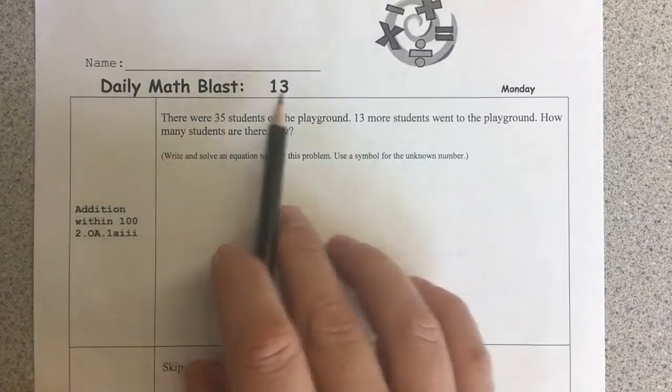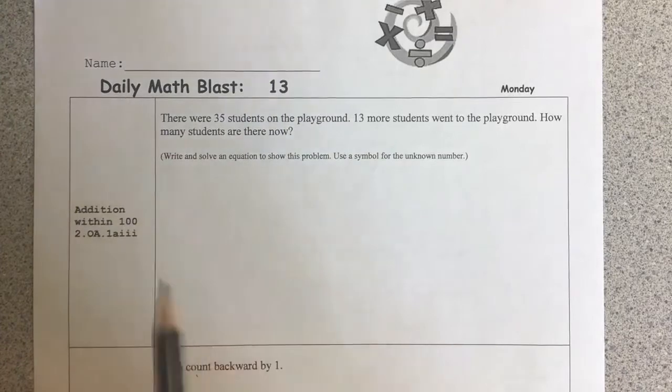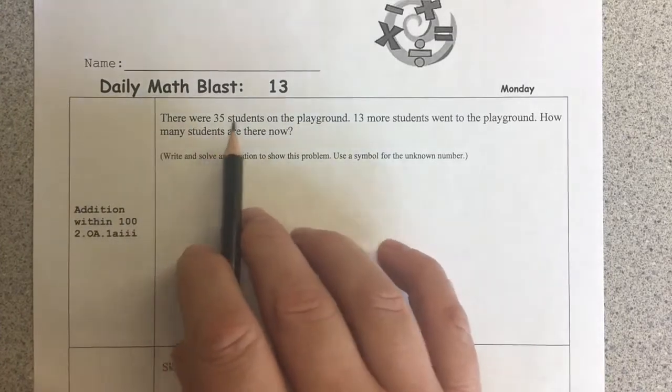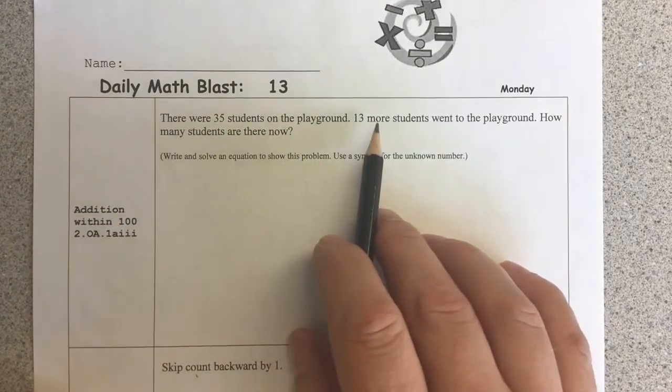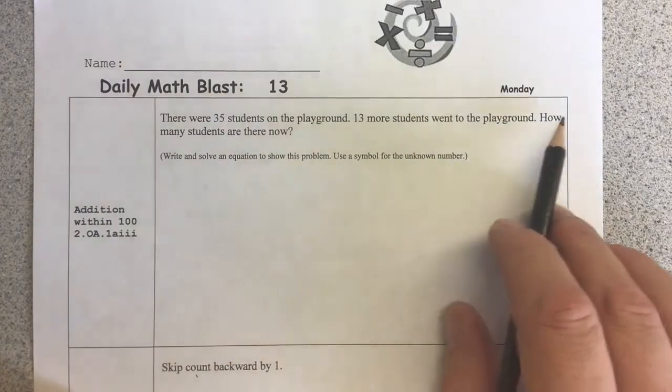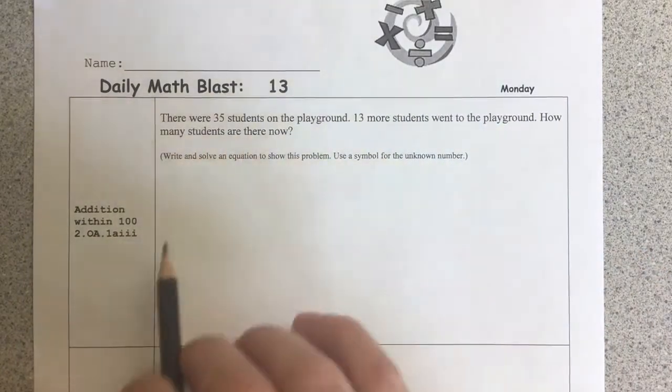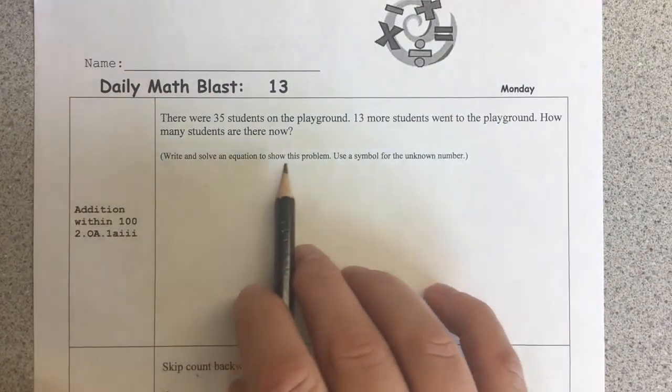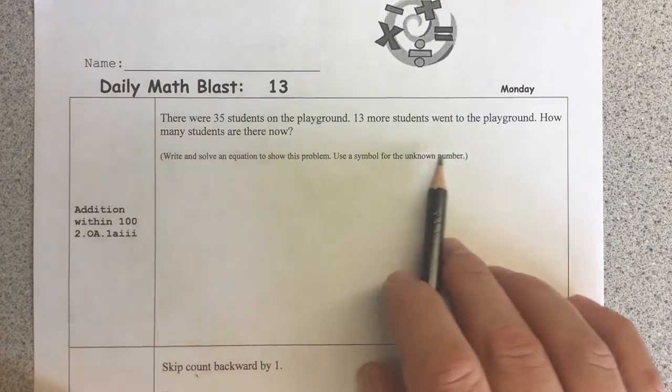Hello, Daily Math Blast 13 edition within 100. There were 35 students on the playground. 13 more students went to the playground. How many students are there now? Write and solve an equation to show this problem. Use a symbol for the unknown number.